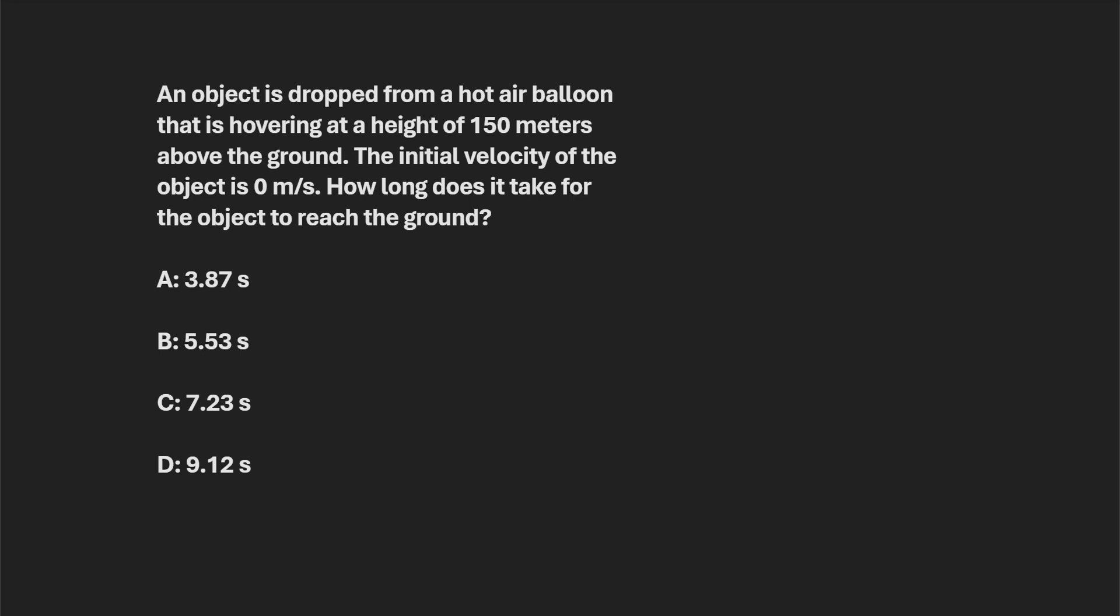Alright, so to solve this practice MCAT physics question, we want to use the strategy that I typically recommend, which is to write out the variables that you have, the known variables, and then write out the variable that you want to figure out. Once you've done that, you can figure out relatively easily, as long as you've memorized them, what equation you need to use to figure out your unknown variable.